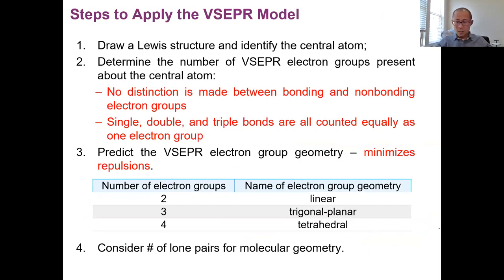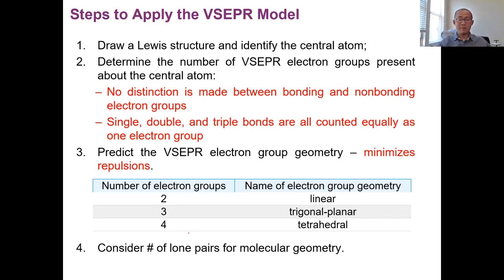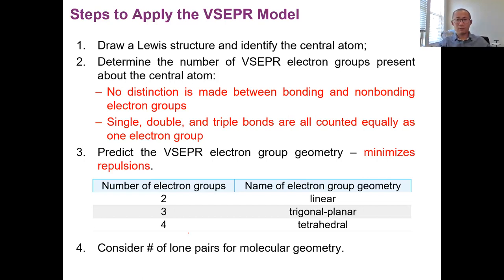Here's the summary: draw the Lewis structure and determine the number of electron groups on the central atom. A bond is one group regardless of single, double, or triple. A lone pair is also one group. Two groups = linear (180°). Three groups = trigonal planar (120°). Four groups = tetrahedral (109.5°). Those are electron group geometries. If there are lone pairs, derive the molecular geometry from the electron group geometry; if no lone pairs, both geometries are the same.